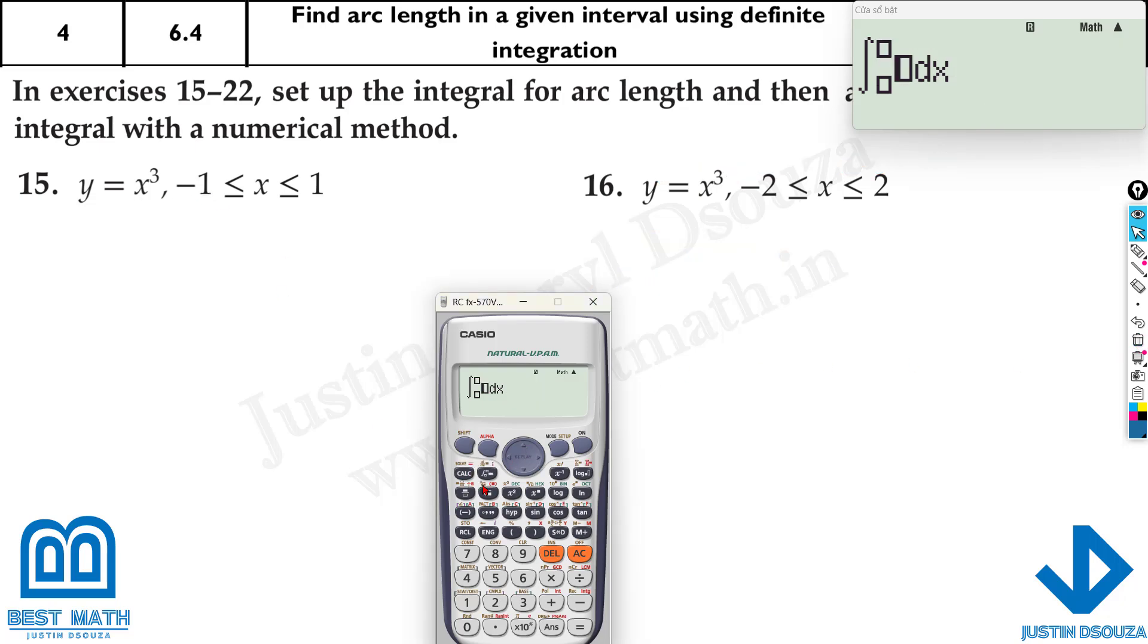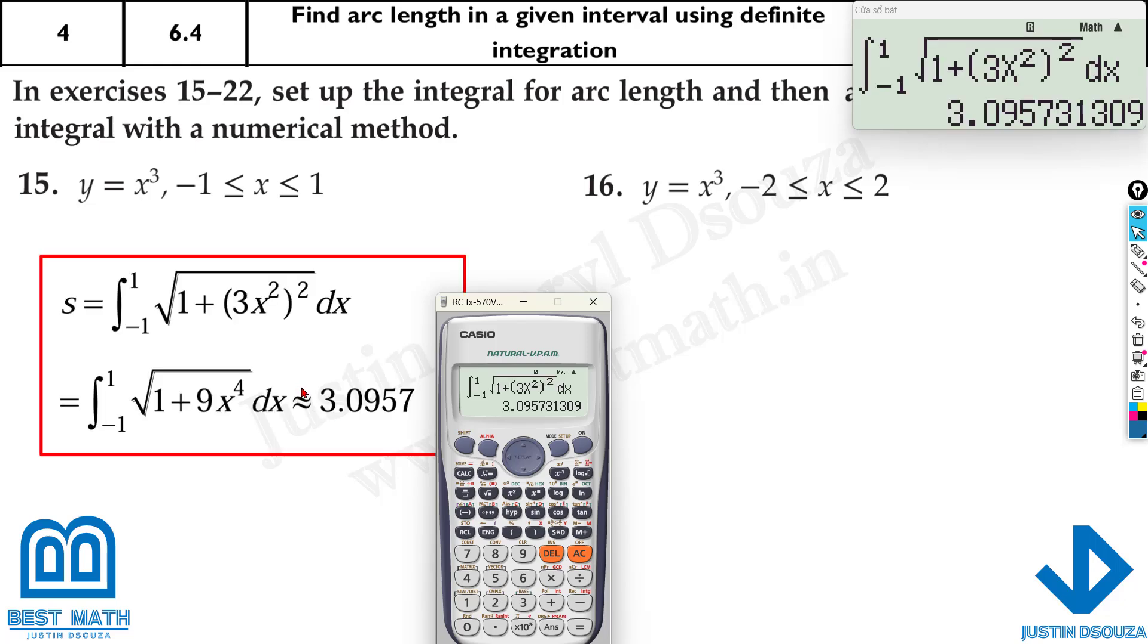So here as well, the first one, you can do it directly even without writing anything. It is 1 plus the derivative of x cube is 3x squared. But remember, use the bracket and square it up. Because if there are two terms, both have to be squared. So brackets will help us doing that properly. Minus 1 to 1. And here we go. The answer has to be 3.09.